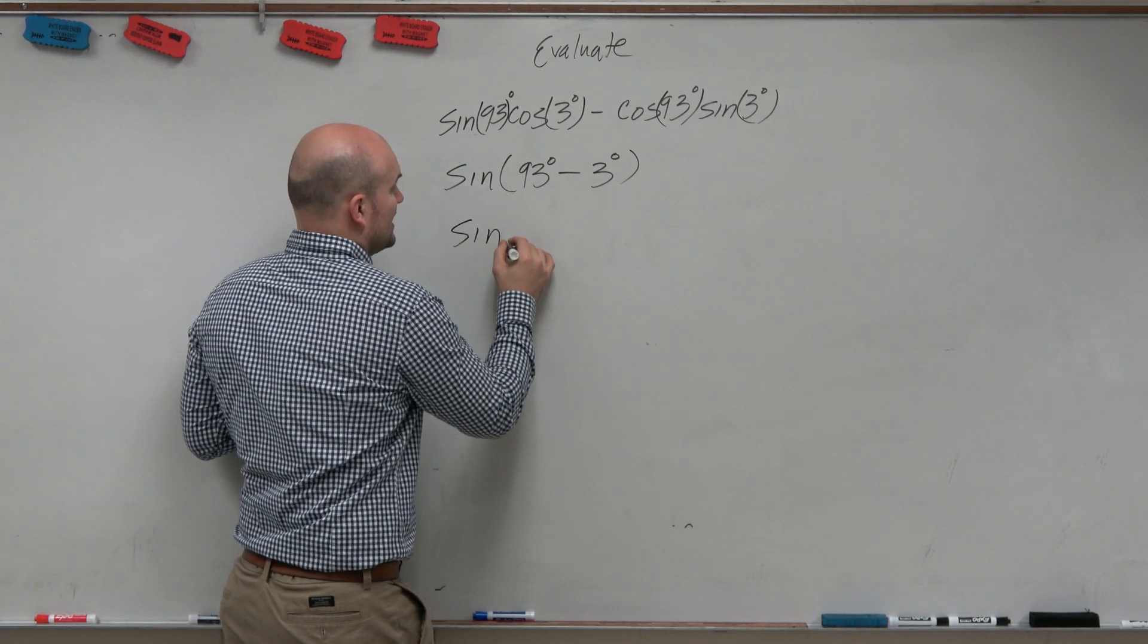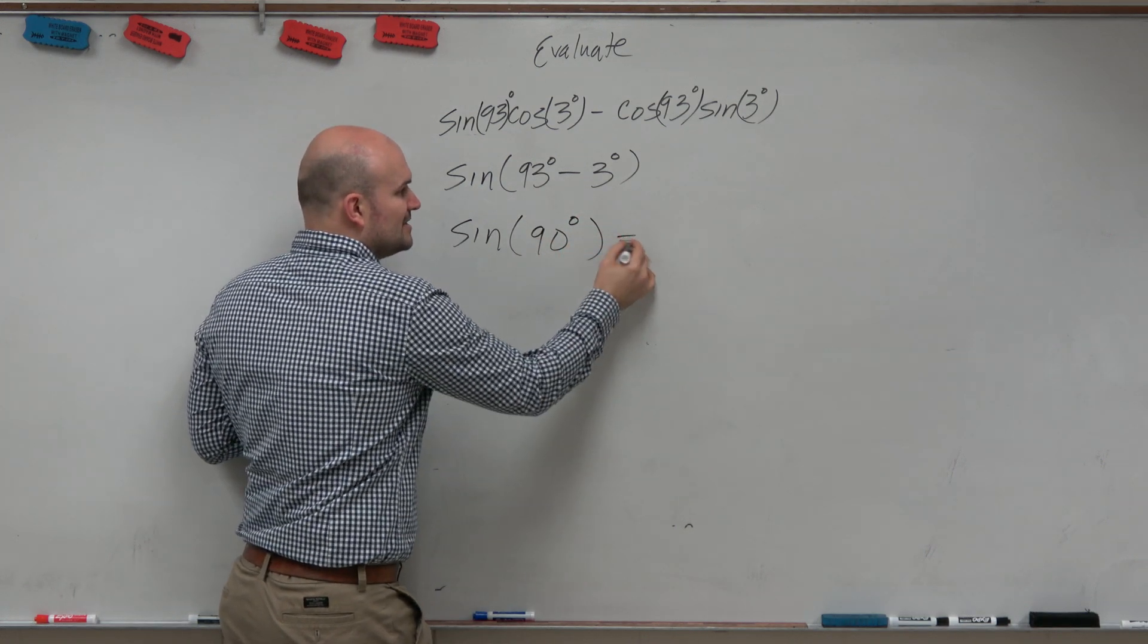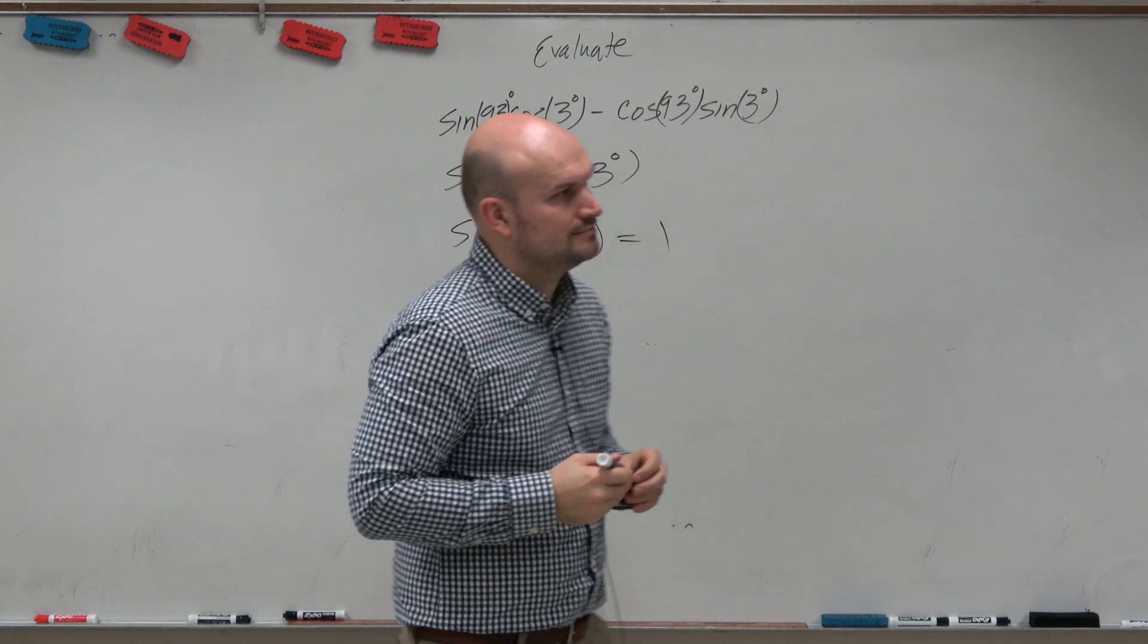So this is the sine of 90 degrees. Sine of 90 degrees is 1. Done.